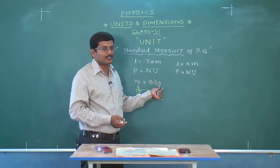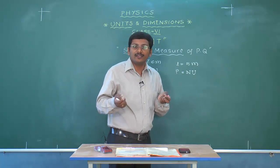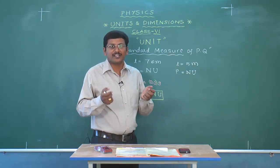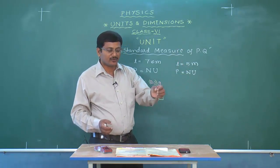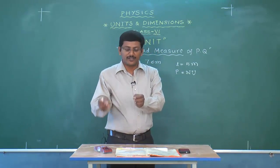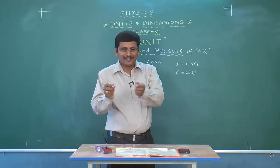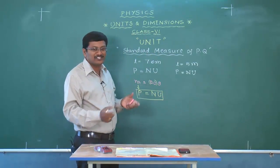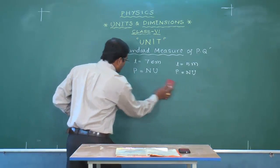For heavier objects we measure in kilograms. When you go to a vegetable market and ask for 1 kg of potatoes, the merchant places a 1 kg weight on the left pan of a balance and piles potatoes on the right pan until they balance. That entire activity is called measurement.